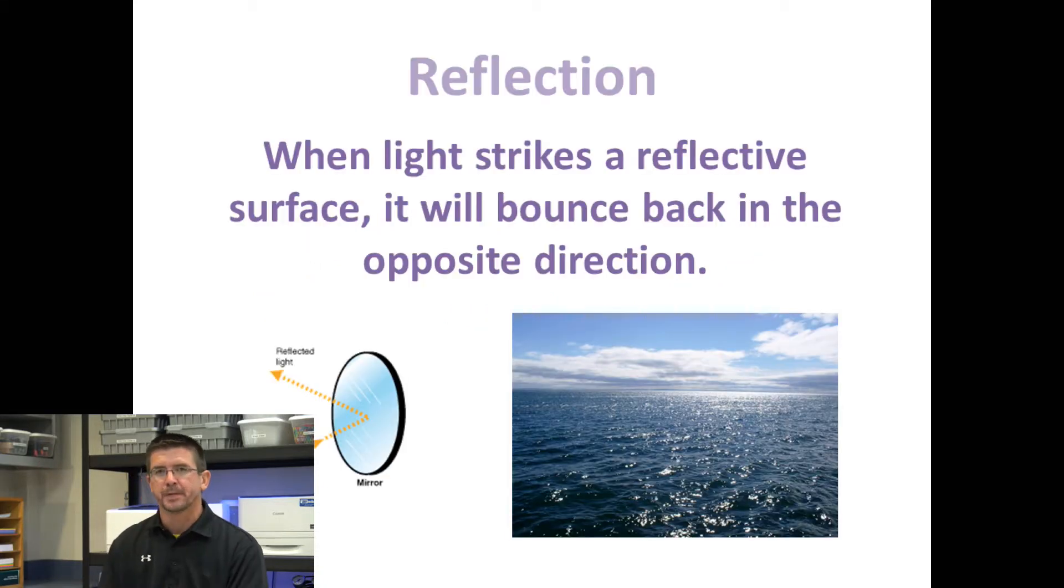The first thing light can do is reflect. We think of looking in a mirror and seeing our reflection. That's because the light's bouncing off the mirror, allowing us to see the light that's going into it. When light strikes a reflective surface, it bounces back in the opposite direction.